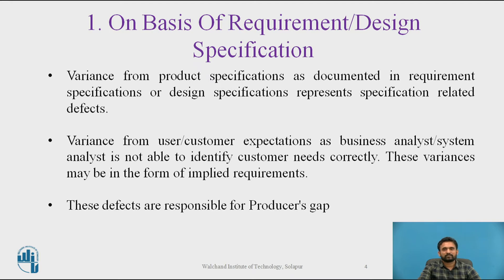To check the completeness of requirements, divide them into three sections: must implement, requirements that are not specified but are assumed, and imaginations. Check if all types of requirements are addressed before the software design phase. These defects are responsible for the producer's gap.